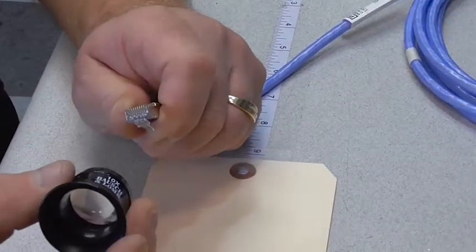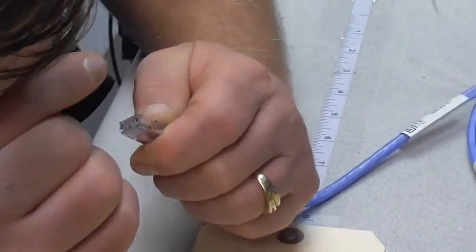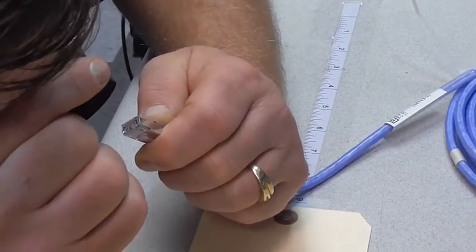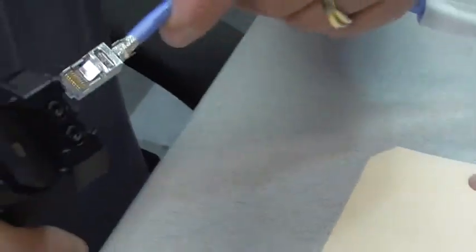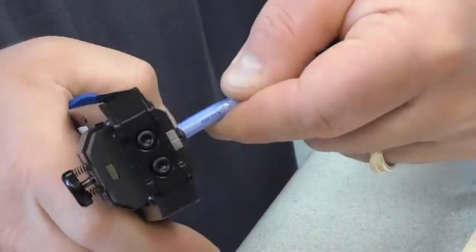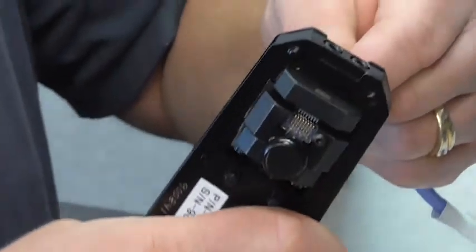Before crimping, verify that all wires are fully seated per 110339 inspection criteria. Crimp the connector using a 110288 RJ45 crimp tool as displayed on screen, keeping the wires firmly seated.